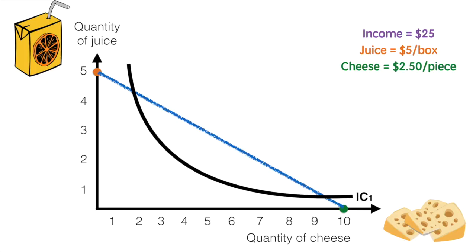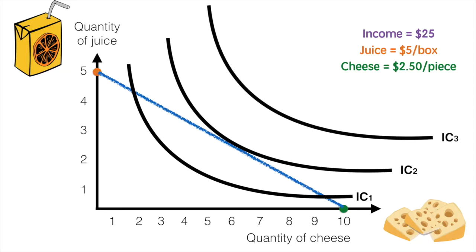we should recall that IC1 represents a lower level of utility than IC2, which represents a lower level of utility than indifference curve 3.